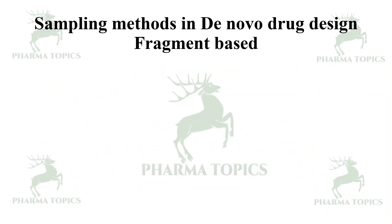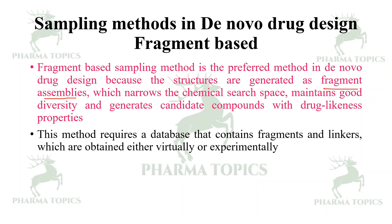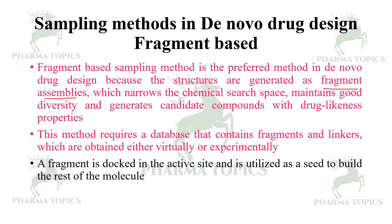Fragment-based sampling is preferred in de novo drug design because structures are generated as fragment assemblies, which narrows the chemical space, maintains good diversity, and generates candidate compounds with drug-likeness properties. This method requires a database containing fragments and linkers obtained either virtually or experimentally. A fragment is docked in the active site and utilized as a seed to build the rest of the molecule.